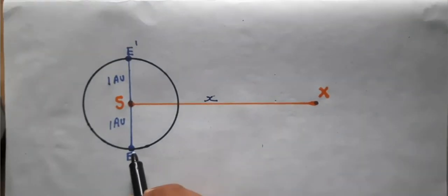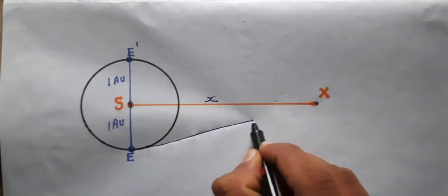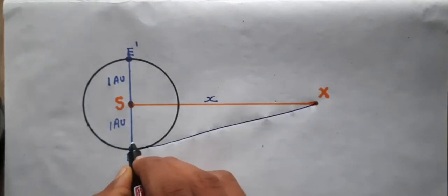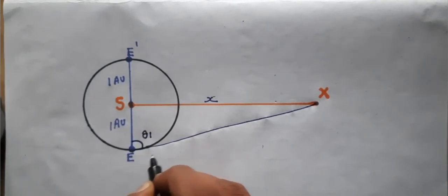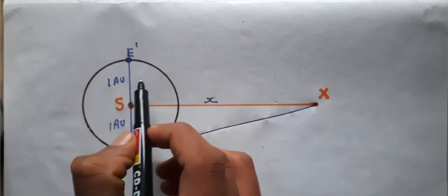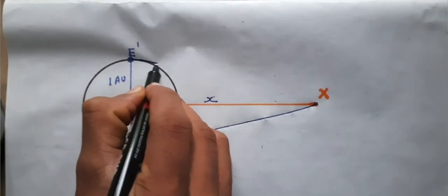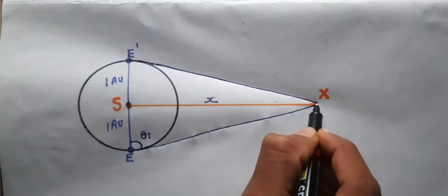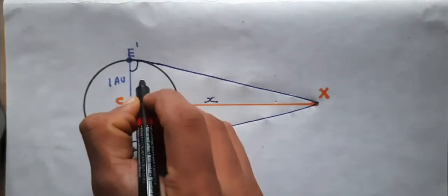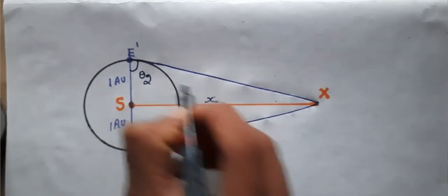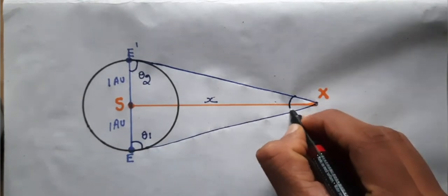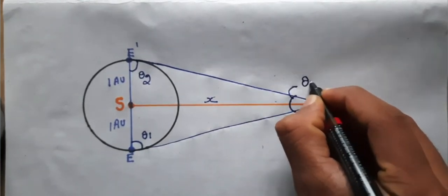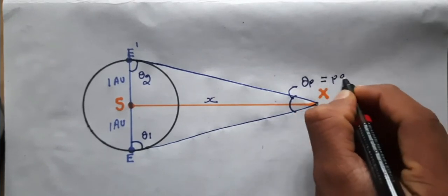The first observation is made in this position of Earth. You can draw a line here, and the angle is noted θ₁. After 6 months, from here, again the readings were taken, and the angle is noted θ₂. By knowing θ₁ and θ₂, I can find this angle θₚ, and this is called the parallax angle.